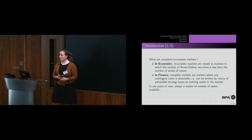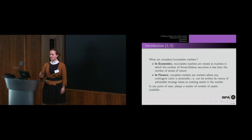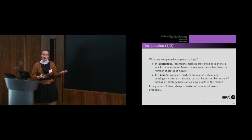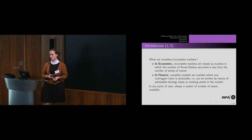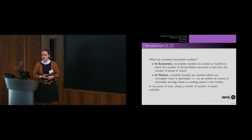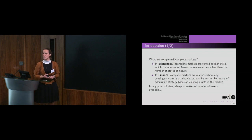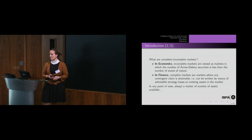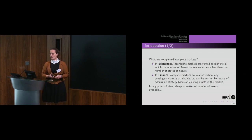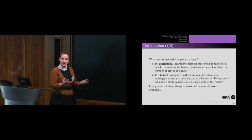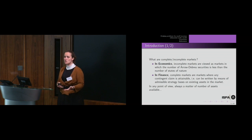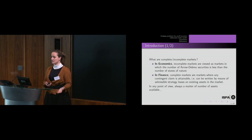First of all, what are complete and incomplete markets? From an economic point of view, incomplete markets are viewed as markets in which the number of securities is less than the number of states of nature. From a financial point of view, complete markets are markets where any contingent claim is attainable, which means it can be written by means of admissible strategies based on existing assets. Whatever the point of view, it always seems to be a matter of the number of assets available.